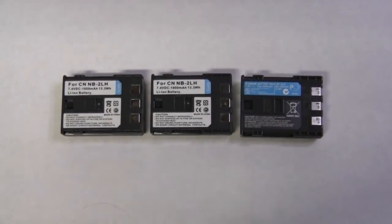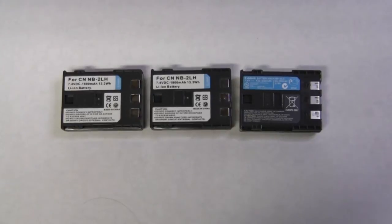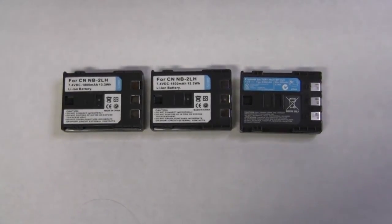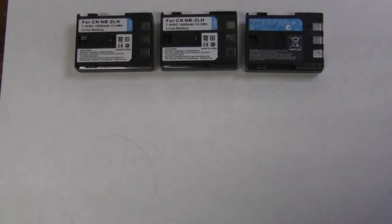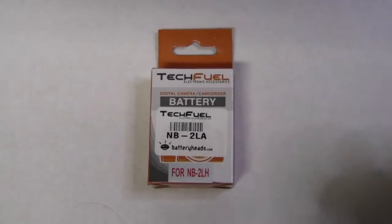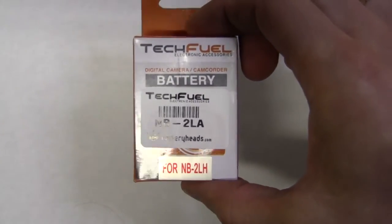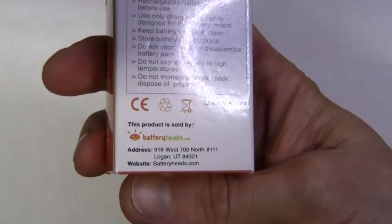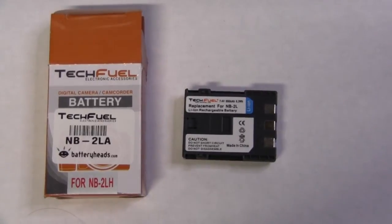I wanted to run my camcorder for about two hours with no interruptions, but these batteries can only run this guy for about an hour and a half. So I bought another one which I didn't unpack yet, and it's supposed to be 850 milliamp hours. Let's have a look. Here it is: battery heads.com, Tech Fuel, made in China. Let me unpack this thing, let's have a closer look.